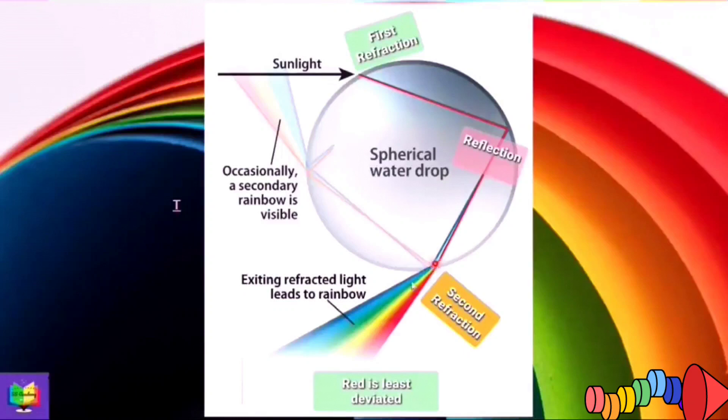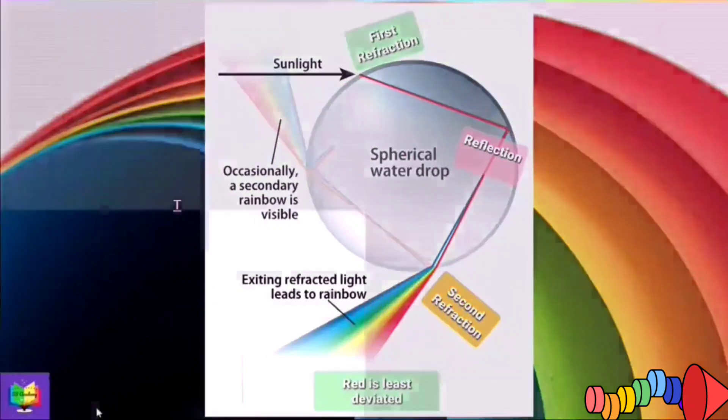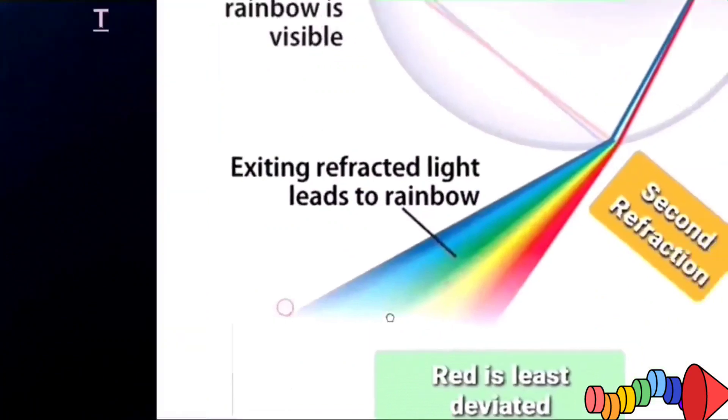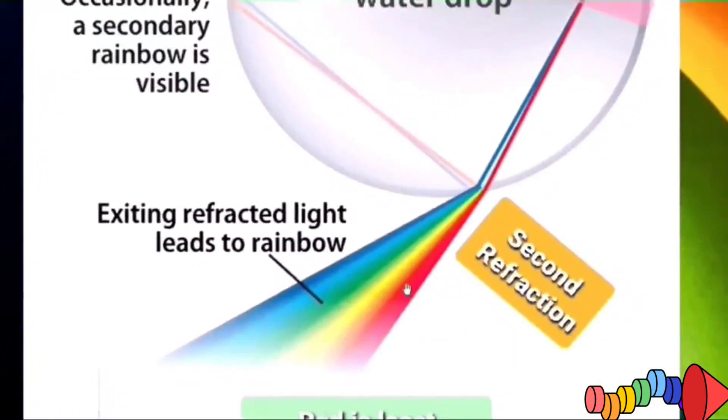Here we will see that a second refraction will take place and in this case, light will be refracted away from the normal because it is traveling from a denser to a rarer medium. Water is a denser medium and air is a rarer medium. Another point to note is that red color will be deviated the least. Now let's have a magnified view of this.